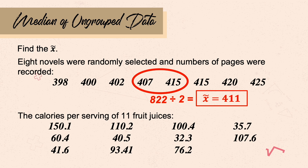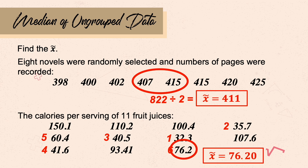The calories per serving of 11 juices were presented. The middle position of 11 is 6, so arranging the data, we get the sixth datum. Counting: 32.3 is first, then second, third, fourth, fifth, and sixth. Since this is the sixth datum, the median is 76.20.